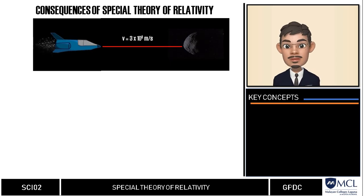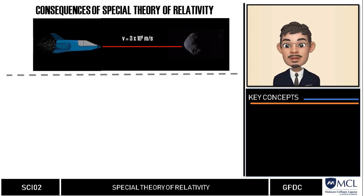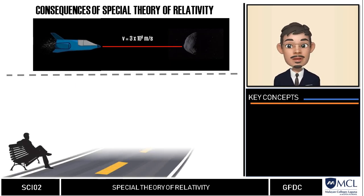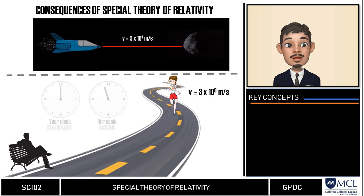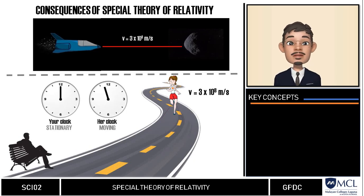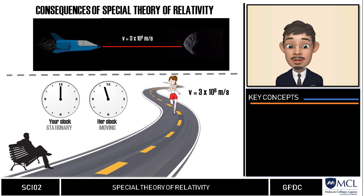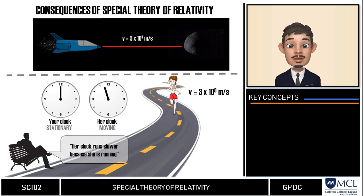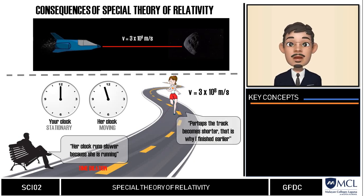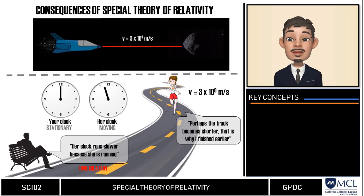The special theory of relativity suggests that moving clocks run slower than stationary clocks. Imagine you and your friend are on a race track — you are watching from a bench while she runs 100 meters at nearly the speed of light. At the end of the run, you compare lap times and observe that your friend's clock measured slightly less than yours. From your frame of reference, her clock is slower because she is moving — this is time dilation. From her perspective, the track becomes slightly shorter — that is, space contracts — so she finishes in less time.